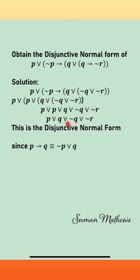We have now written it entirely in terms of disjunctions, so this is the disjunctive normal form. Thank you, and we have used this implication formula here for further reference.